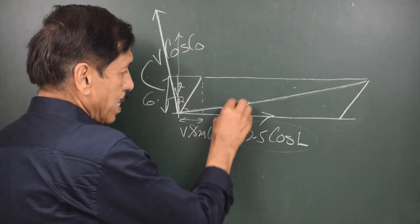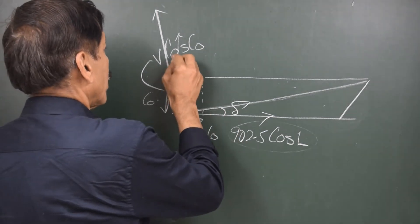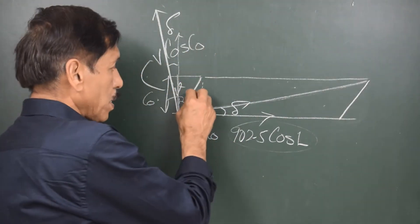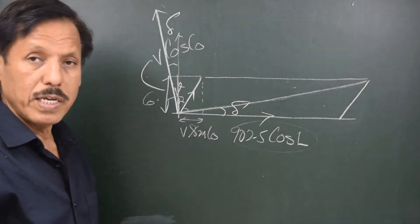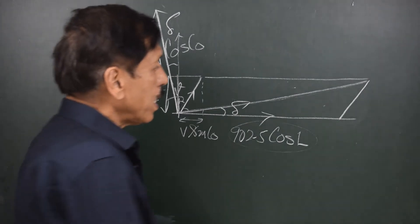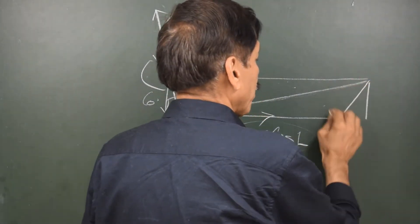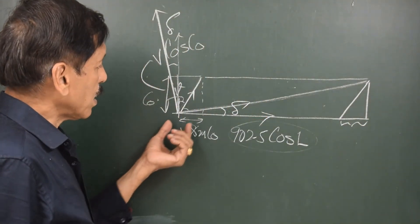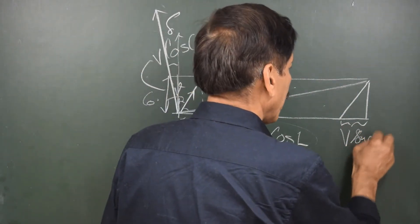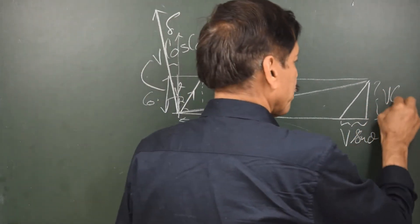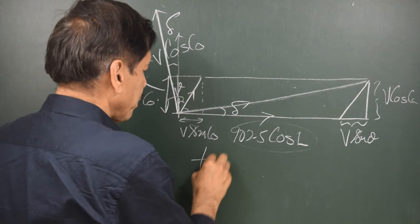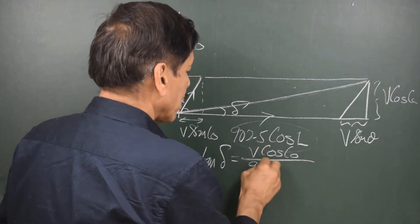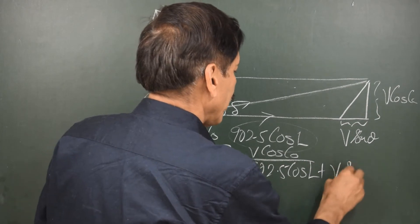The gyro shows its axle in a direction perpendicular to the diagonal. If this angle is delta, then delta is the north-south speed error. To find delta, we construct a right-angle triangle by dropping a perpendicular from the end of the diagonal. The opposite side is V cos(course) and the adjacent side is 902.5 cos(L) plus V sin(course), giving: tan(δ) = V cos(course) / [902.5 cos(L) + V sin(course)].